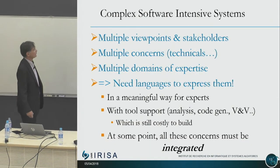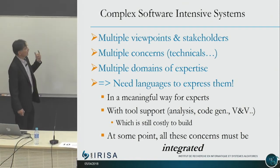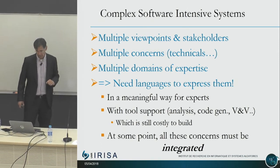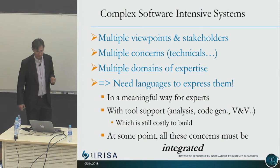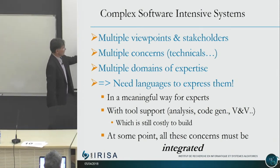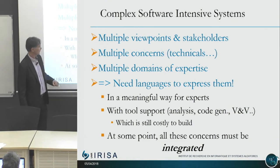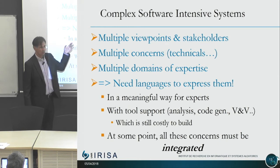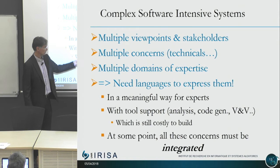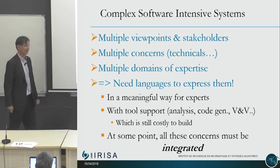Complex software-intensive systems have multiple viewpoints and many stakeholders, many concerns including technical concerns, multiple domain expertise, and we need languages to express them. These languages must make it possible for experts to work in a meaningful way. There must be tool support — analysis tools, code generation, verification, validation — which are still extremely costly to build. And the concerns must be integrated, which is an issue.